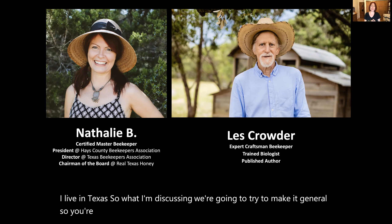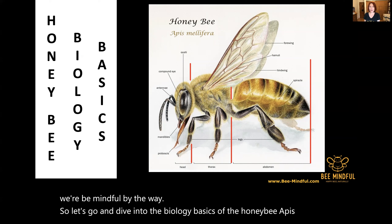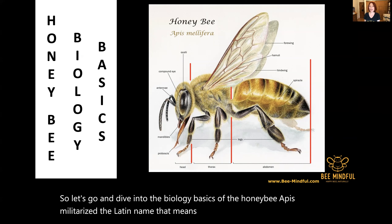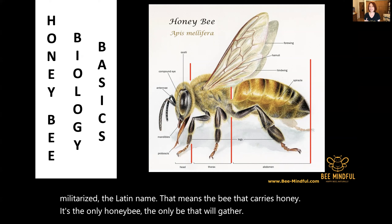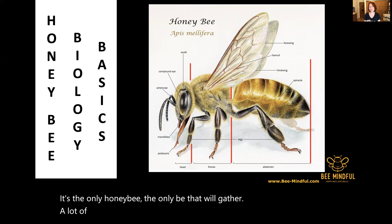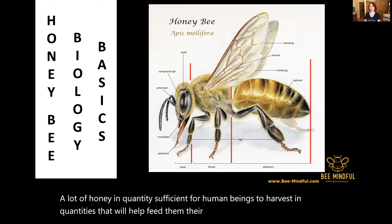So let's go and dive into the biology basics of the honeybee. Apis mellifera is the Latin name — that means the bee that carries honey. It's the only honeybee, the only bee that will gather honey in a quantity sufficient for human beings to harvest in quantities that will help feed them, their families, and their fellow humans.